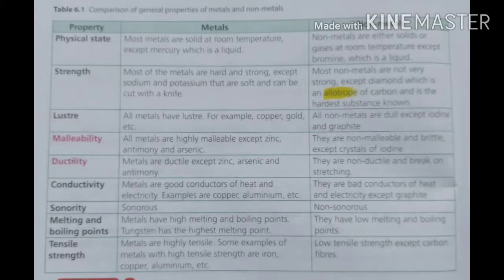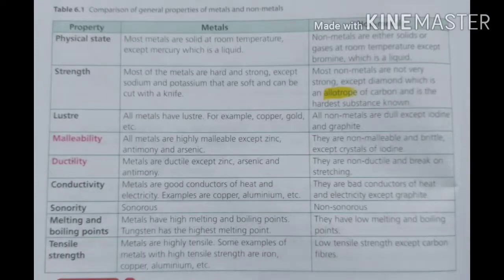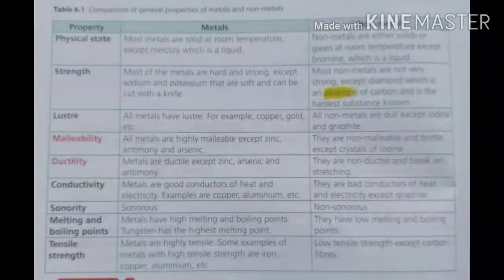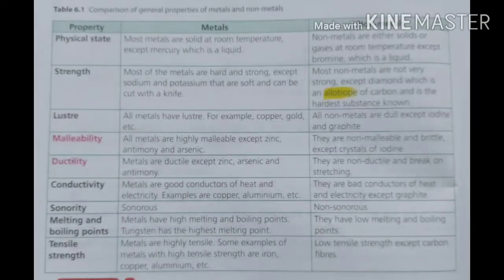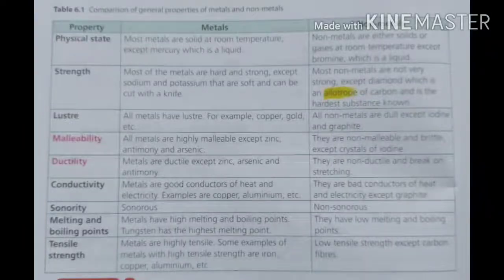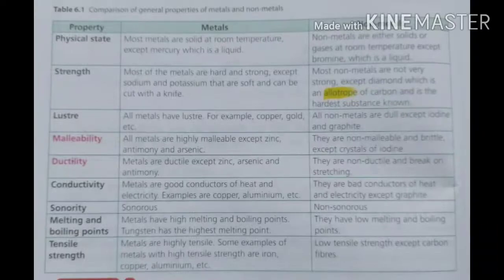Metals have high melting and boiling points, while non-metals have low melting and boiling points. Regarding tensile strength, metals have high tensile strength — examples are iron, copper, and aluminium. Non-metals have low tensile strength, except carbon fibers. These are the general properties of metals and non-metals.